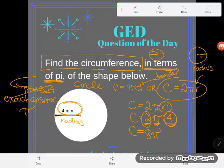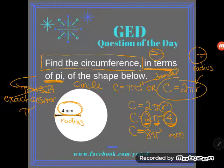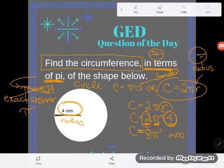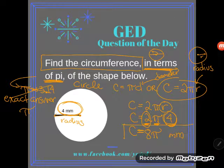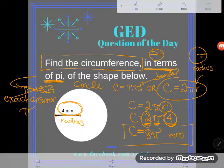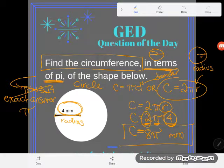So eight times pi what? Eight times pi millimeters. Circumference is just a line around the outside of a circle, so we measure circumference with a linear measurement. Plain old millimeters. And I'm done. I'm literally done.